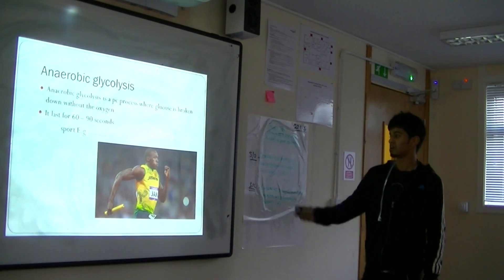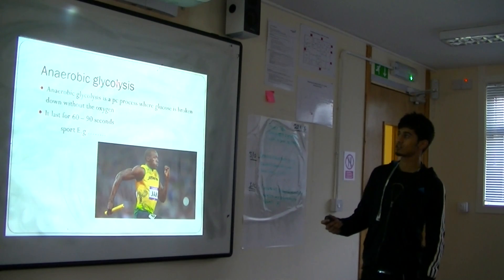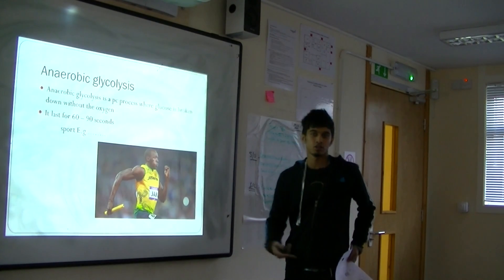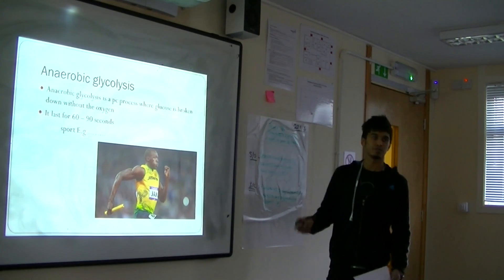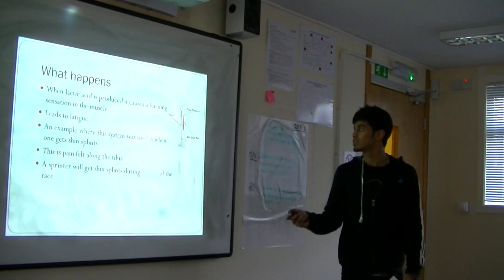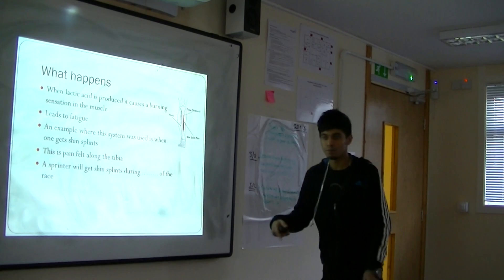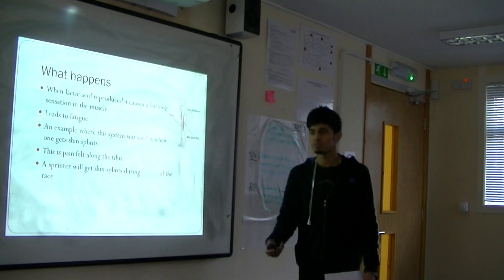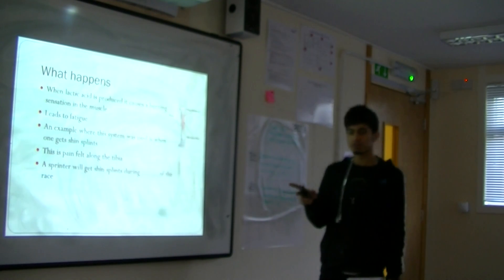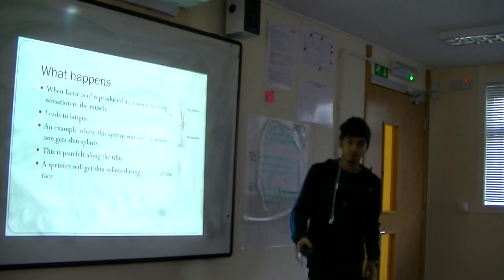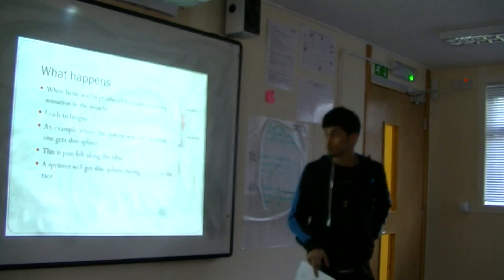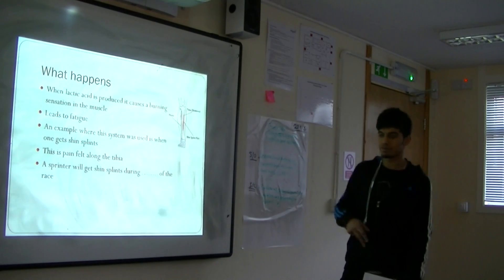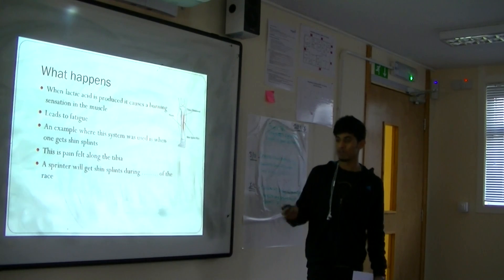For example, Usain Bolt uses the anaerobic lactic acid system because he is not taking in enough oxygen while running. When lactic acid is produced, it causes a burning sensation. This can happen in the last couple of seconds of a race, or in a marathon towards the end. You will start feeling pain, and if you don't stop the race it can cause heavy damage.